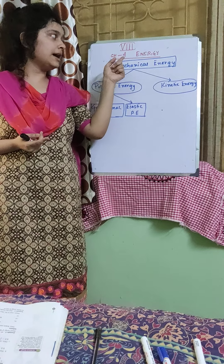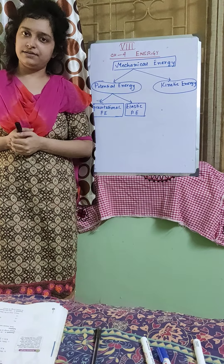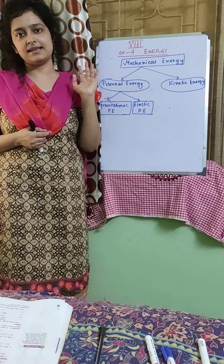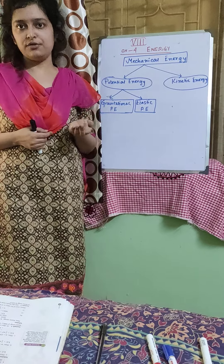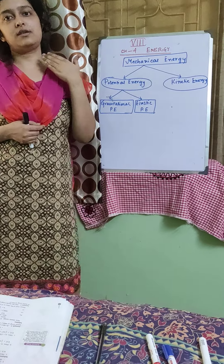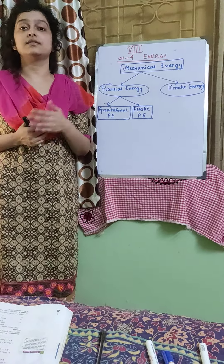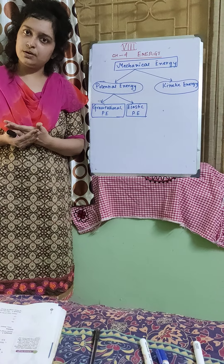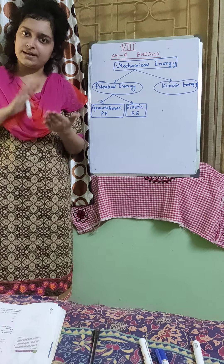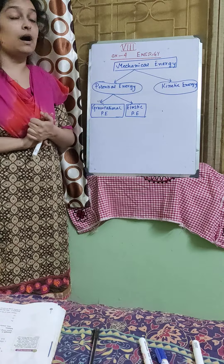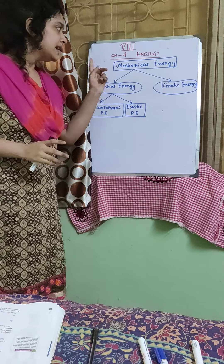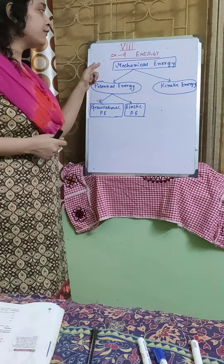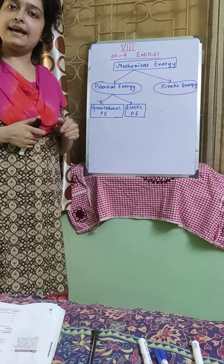We are continuing with chapter 4, Energy. In the last video session, we have already done what is energy, what is transformation of energy, what is the law of conservation of energy, what is work done, the different criteria for work done, situations of no work done, and power. So let's start with the different forms of mechanical energy.